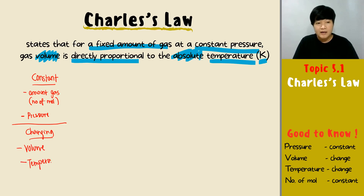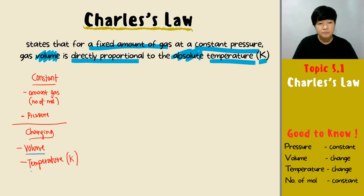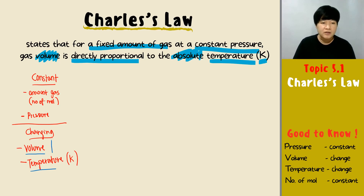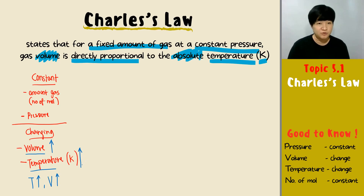Just be very careful — the temperature in Charles' Law must be in Kelvin. The relationship between volume and temperature is directly proportional, which means when the volume increases, the temperature increases, or when the temperature increases, the volume increases. Either way works because they are directly proportional.